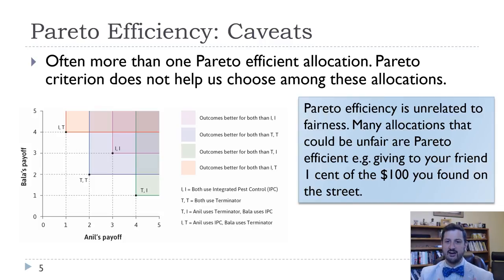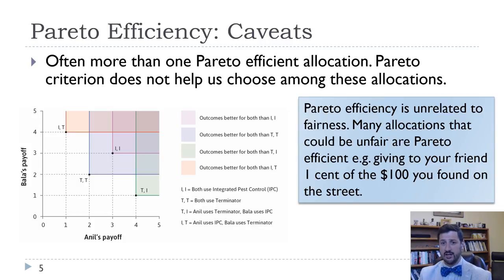If I have $100 and you have nothing, that can be a Pareto efficient outcome. Because in order for me to give you anything, that makes me worse off. So if I give you one cent or $1, then you're better off but I'm worse off. Moving from 100-0 to 99-1 is not a Pareto improvement, even though it might feel more fair.